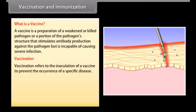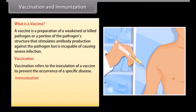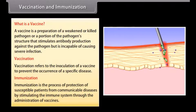Vaccination refers to the inoculation of a vaccine to prevent the occurrence of a specific disease. Immunization is the process of protection of susceptible patients from communicable diseases by stimulating the immune system through the administration of vaccines.